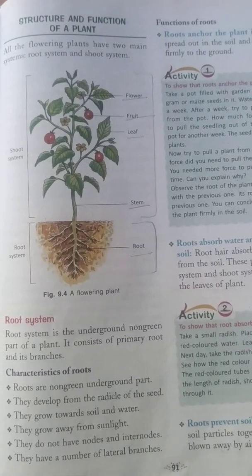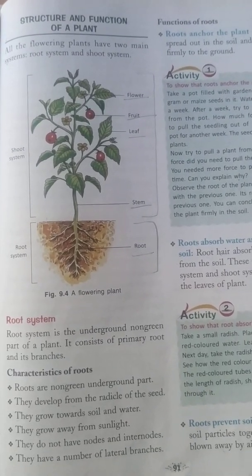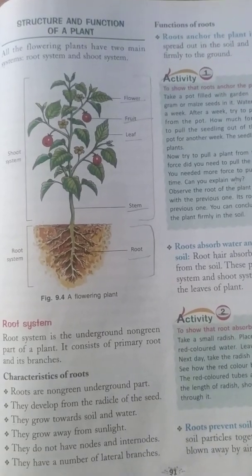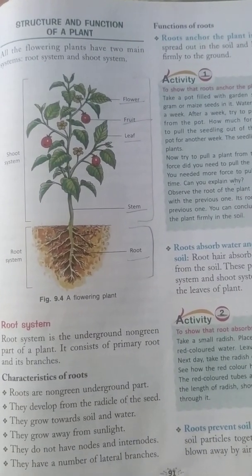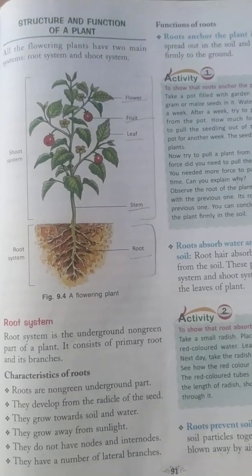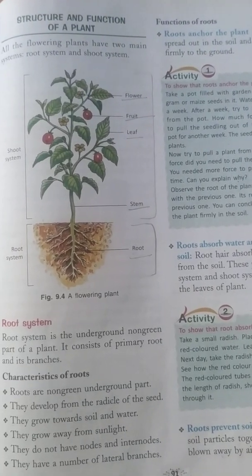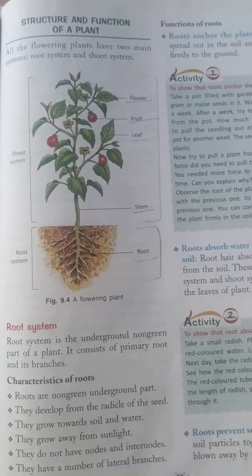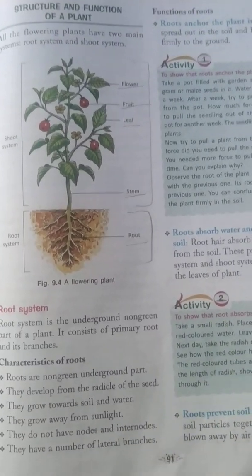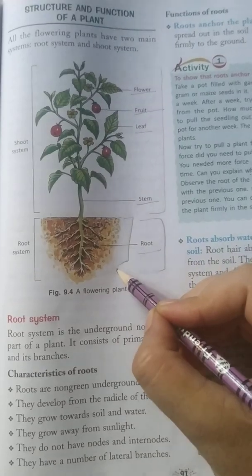Good morning students. In our previous lecture we discussed about the structure and function of a plant. As we studied earlier, a plant has two main systems: shoot system and root system. So today we are going to study about the root system of a plant.